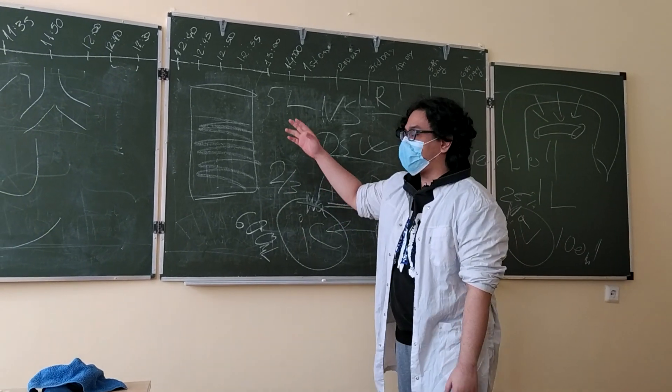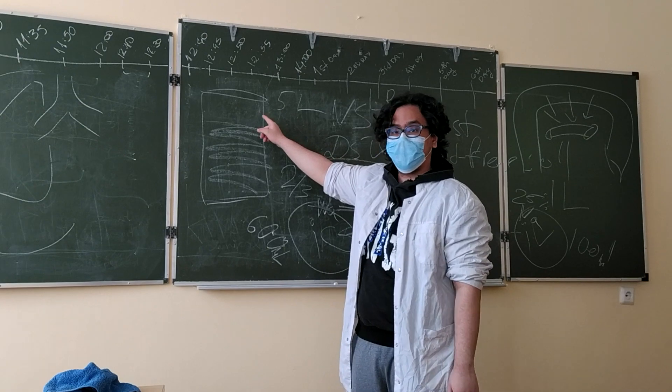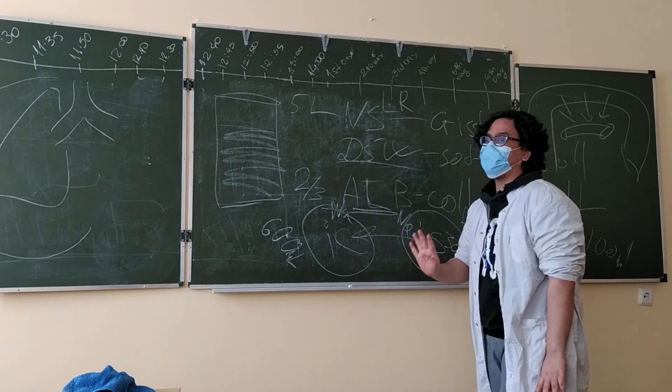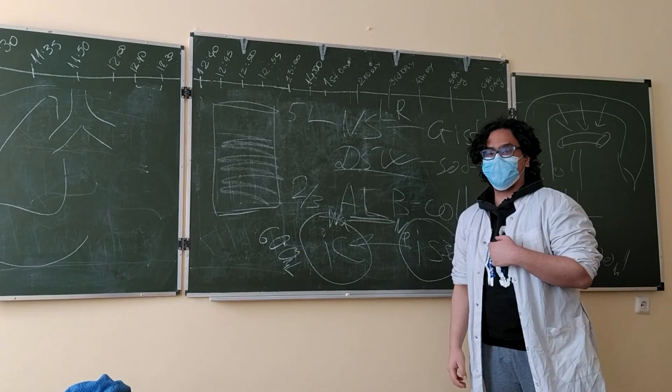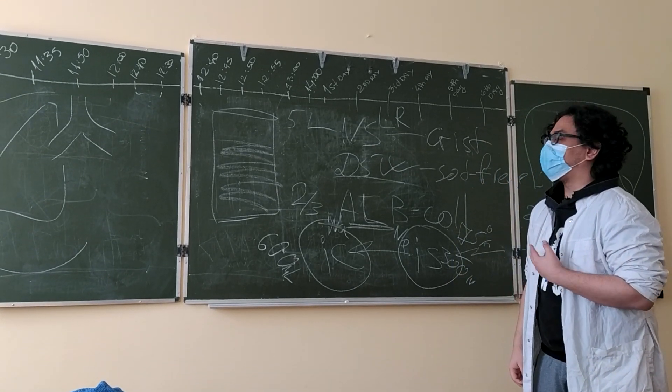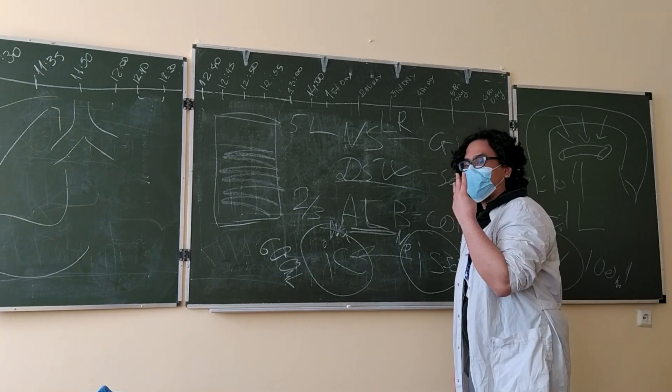Right now we have determined that the patient lost one liter of blood from its five liters, so we have four liters left. At this point we are trying to determine which IV solution will be the best for the recovery of blood. So we have three main solutions.